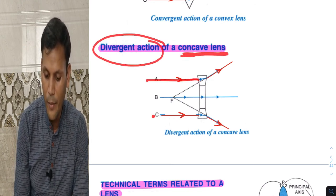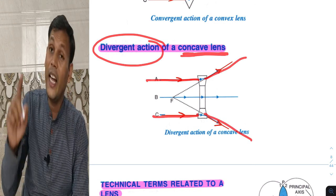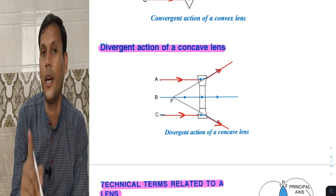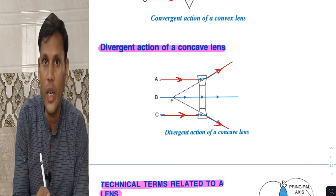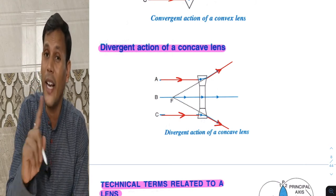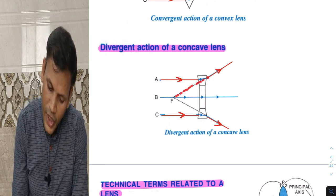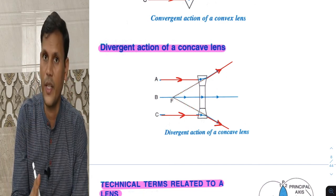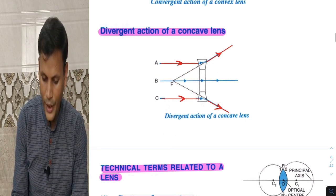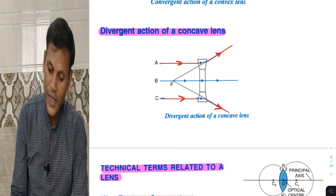All parallel beams incident on a concave lens diverge and appear to meet at a point — that point is called the focus. They appear to meet, not actually meet. That point is called focus. This is the divergent action of the concave lens.